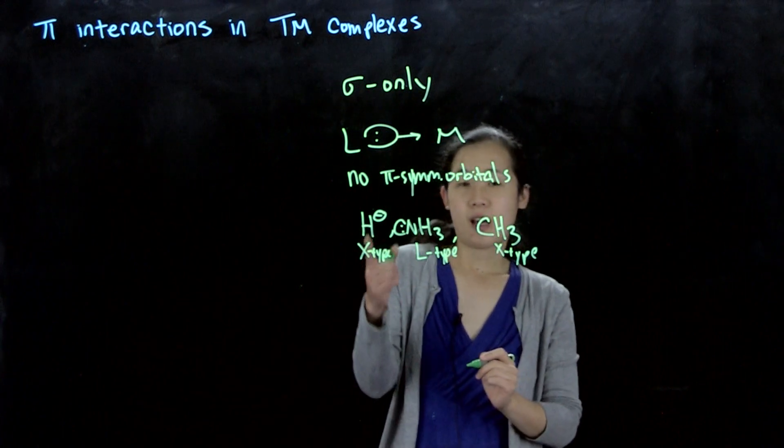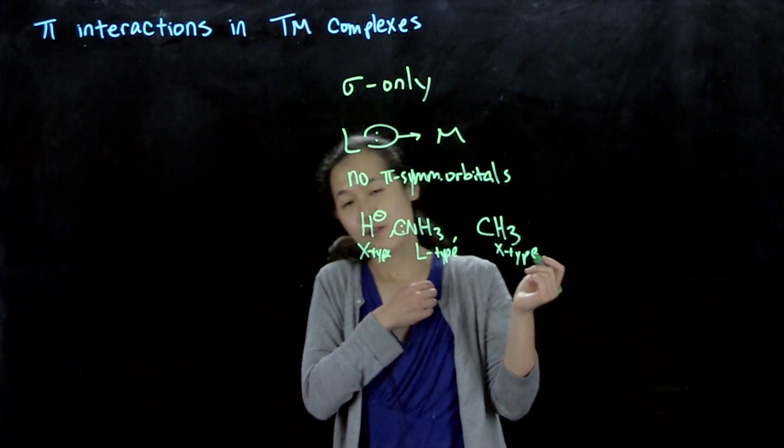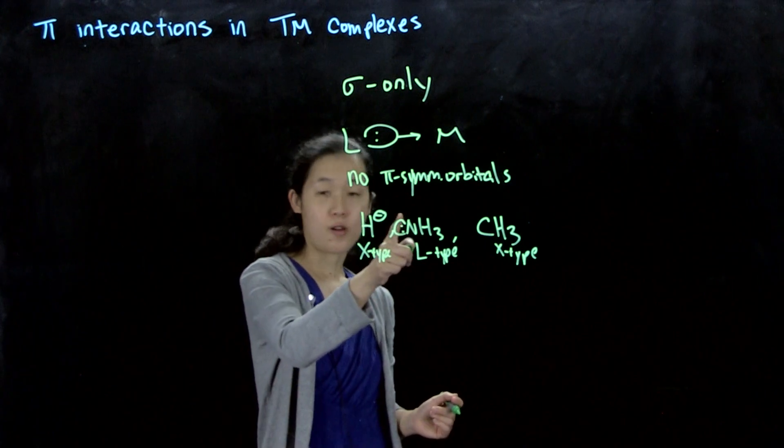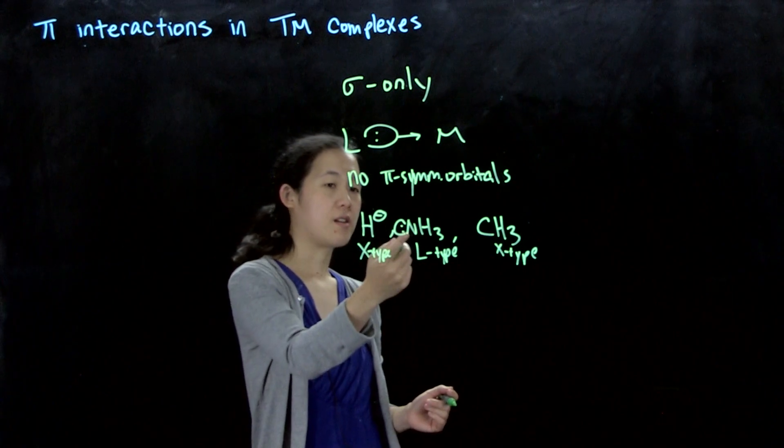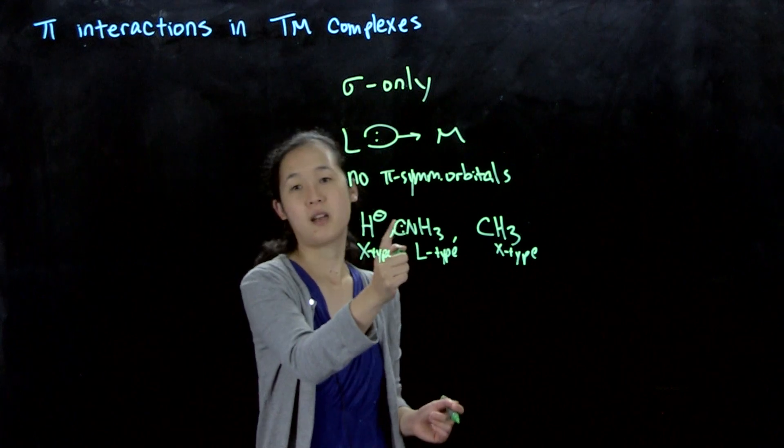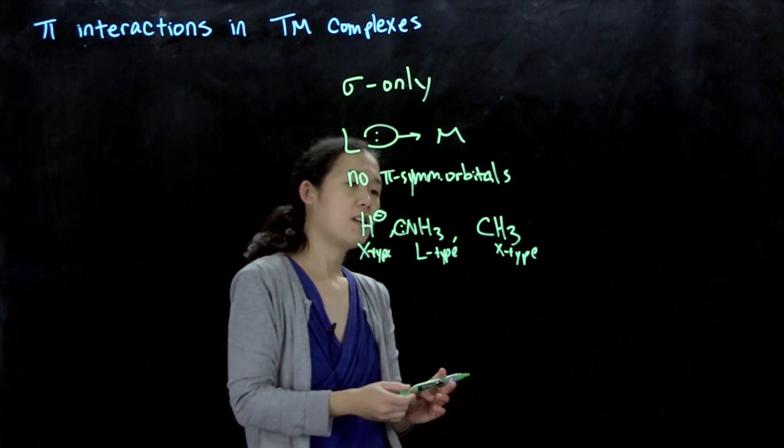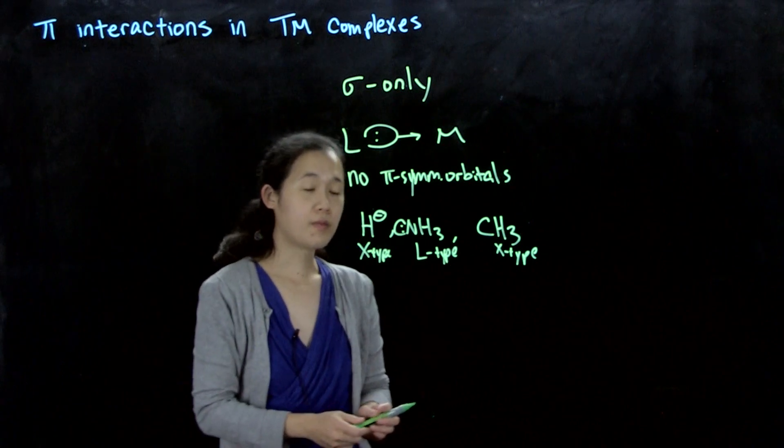Hydride is obvious because it has no pi-symmetry orbitals that are filled either way. You have your 1s². Ammonia has only that lone pair. The sigma bonding orbitals between the nitrogen and the hydrogens are too low in energy to interact. Same for methyl. So it's sigma-only.